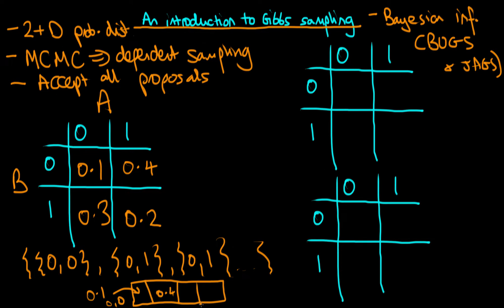Then we chop up the last two bits according to 0.3 and 0.2, to correspond to the other two cases in our table. We generate a uniform number between 0 and 1, figure out which compartment it falls in, and that corresponds to a particular paired set of outcomes. However, for more complex examples — especially for continuous parameters — you can't use simple rules like this. What Gibbs sampling relies on us knowing are the conditional distributions and being able to independently sample from those conditional distributions.